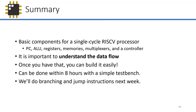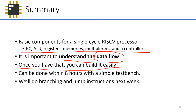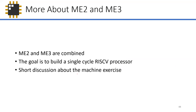In summary, we've discussed all the basic components for a single RISC-V processor. It's important to understand the data flow — I've been using spaced repetition throughout the lecture so it gets pegged into memory. Once you have that understanding, you can build it easily — even within eight hours with a simple test bench. Branching and jump instructions will be covered next meeting on Friday. ME2 and ME3 are combined, and the goal is to build a single cycle RISC-V processor.